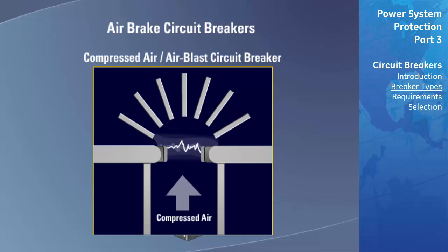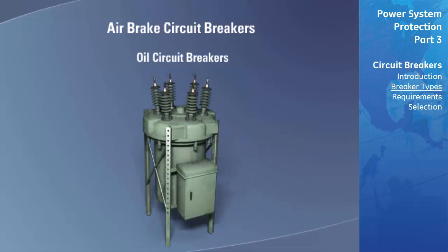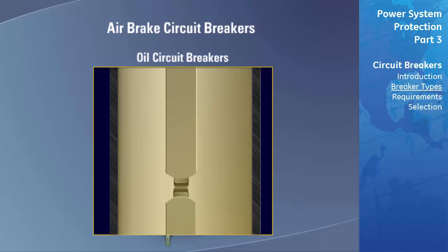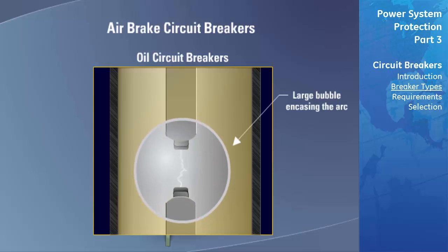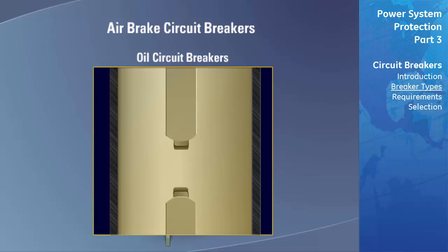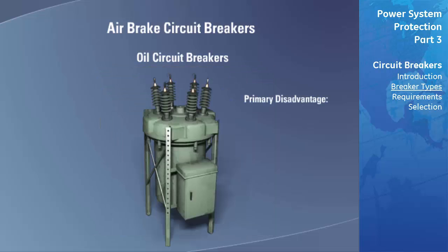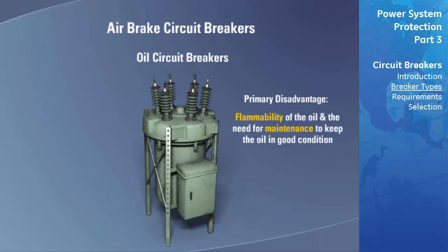Oil circuit breakers function by drawing the arc under oil, thereby extinguishing it. When the electric arc is drawn under oil, it vaporizes the oil and creates a large bubble surrounding the arc. The gas inside the bubble is predominantly hydrogen, which impairs ionization. The decomposition of oil into gas requires energy from the arc's heat, while the surrounding oil conducts heat away, contributing to deionization. The primary disadvantage of oil circuit breakers is the flammability of the oil and the maintenance required.